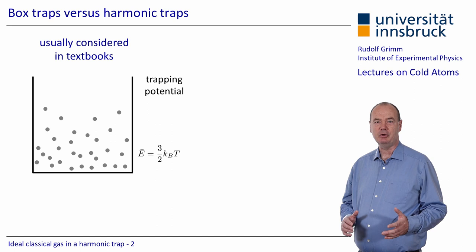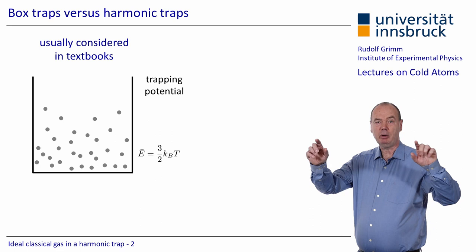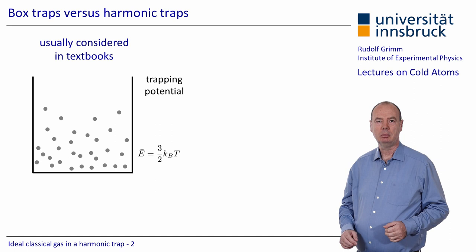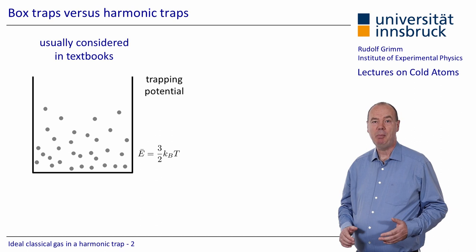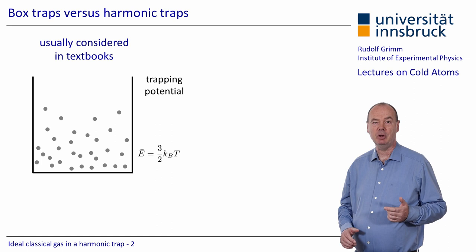Let me start with the situation usually considered in textbooks: a three-dimensional box potential in which particles are confined between hard walls. From the equipartition theorem we know that, on average, a particle has an energy of 3/2 k_B T, where k_B is the Boltzmann constant and T is the temperature. Each degree of freedom contributes 1/2 k_B T.